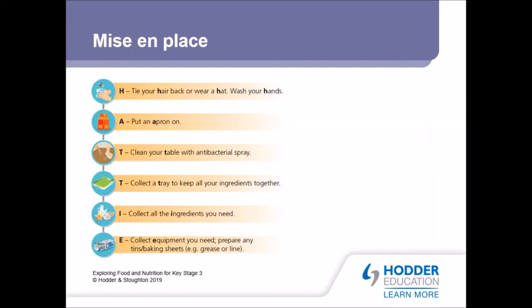So let's go through HATTIE: H is for tie your hair back, wash your hands, wear a hat if you want to, put on an apron, clean the table, and make sure you've got a tray ready. Then I and E are for ingredients and equipment - you'll find that list at the bottom for YouTube. Let's get back to me and we'll do this first bit together. I'm going to pop outside to get some basil and bits and pieces for later on.